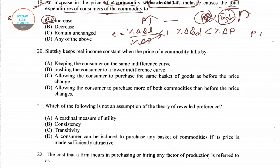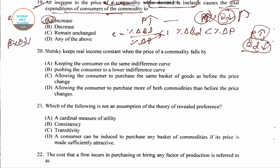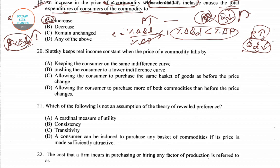When the price of a commodity increases, by the law of demand the quantity demanded falls. Expenditure is P multiplied by Q. When P increases, Q falls, but given the inelasticity assumption the fall in Q is less than the increase in price. Therefore the overall expenditure (P×Q) increases. The consumer's expenditure on the commodity increases, so option A is the right answer for question 19.